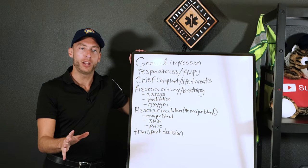OPQRST investigates pain in more detail. SAMPLE gets the patient and event history. Let's break down OPQRST. O is for onset — what was the patient doing when this started, when did it start, what triggered it, and how long has it been going on? We try to get a picture of what happened when it first started.